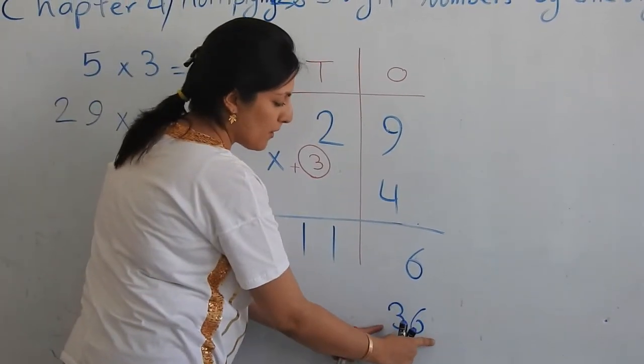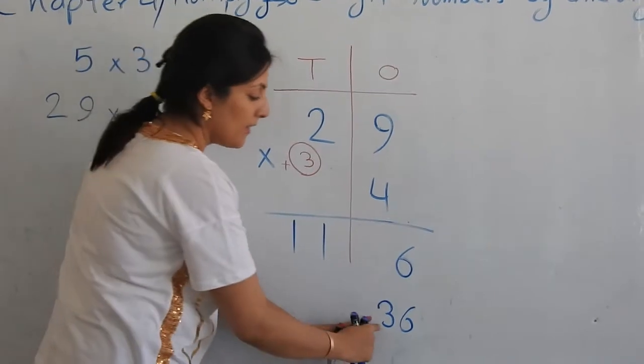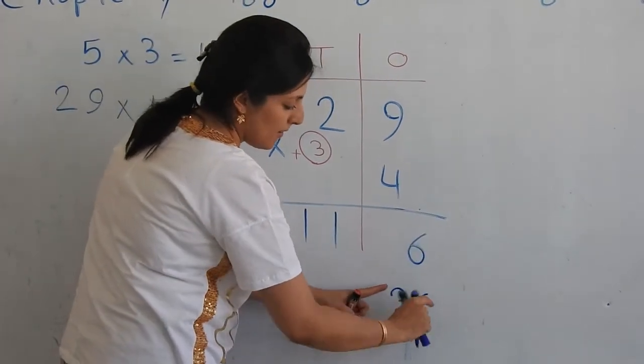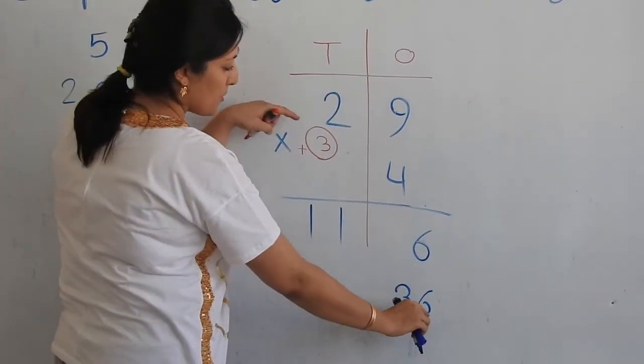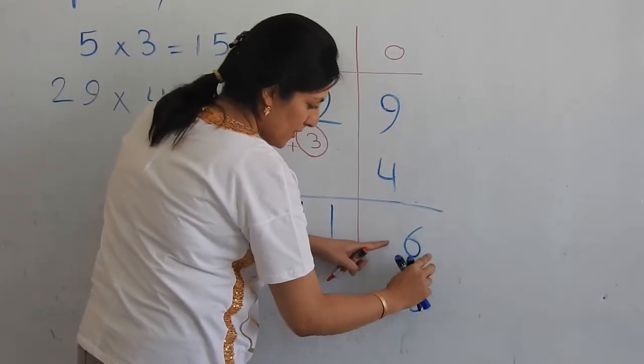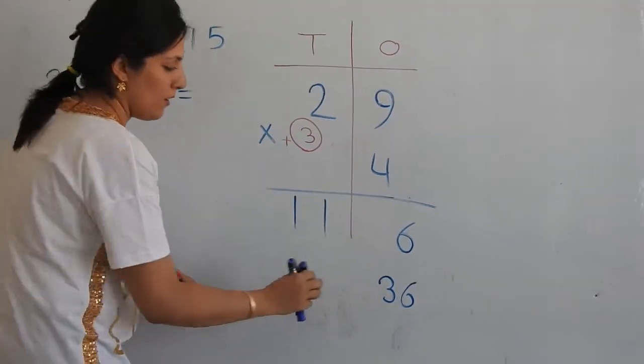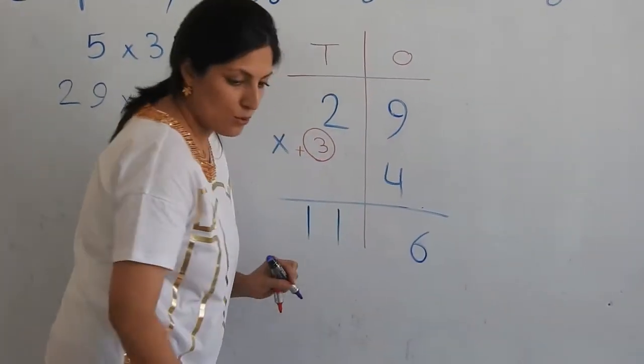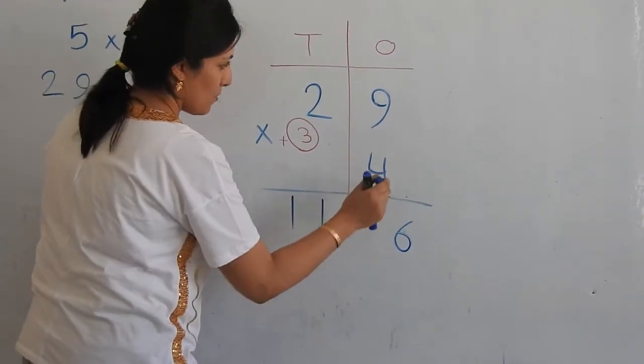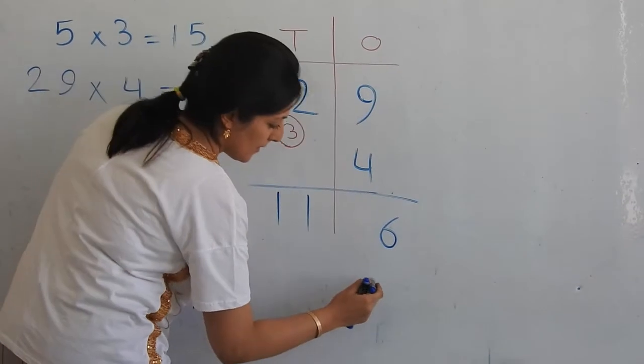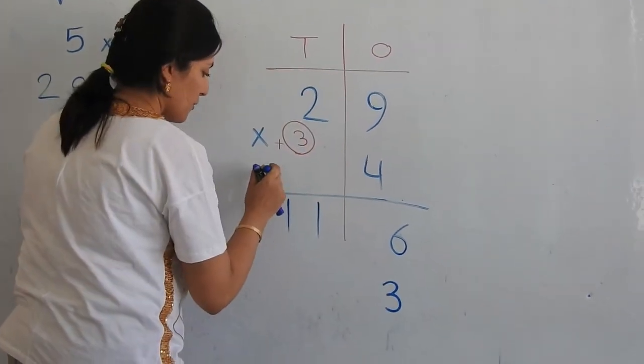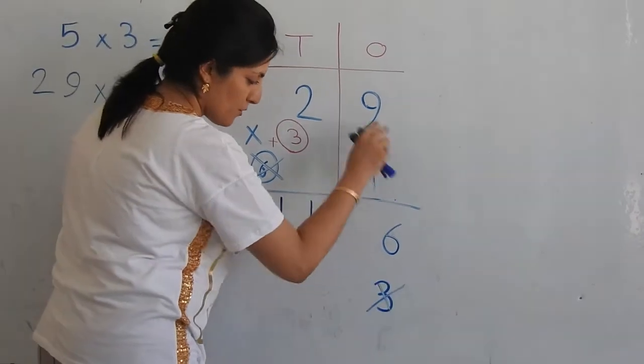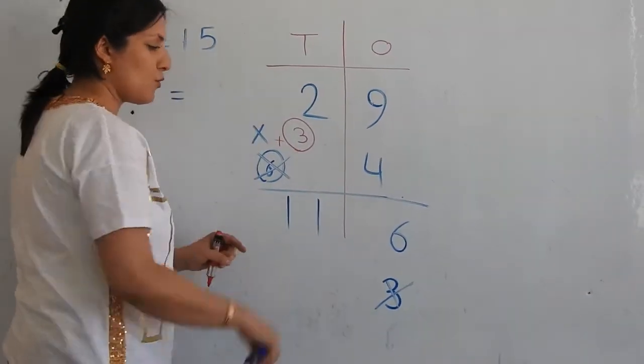The ones should stay down and tens should go to the next door. Don't mix it like that. Nine times four, thirty-six, 6. The ones should stay down and tens should go to the next door.